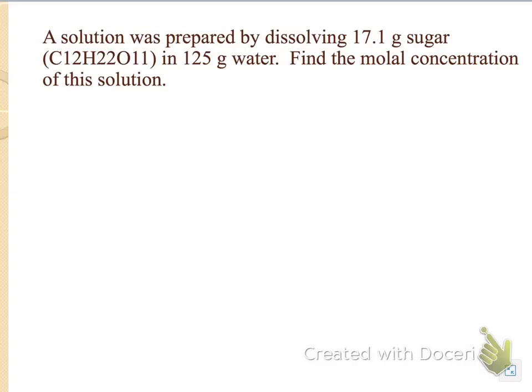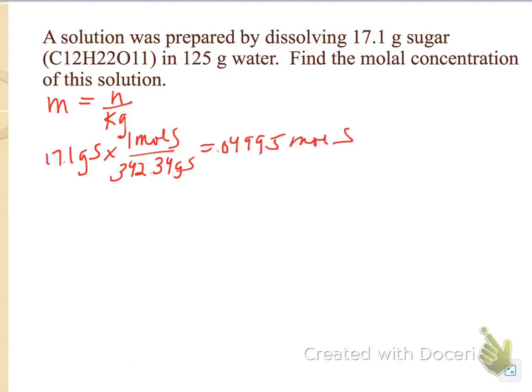Okay, so here we have a solution of 17.1 grams of sugar in 125 grams of water. We want to find the molal concentration. So molality is moles over kilograms. And if I have 17 point, I have to find moles first. So if I have 17.1 grams of sugar, I can find how many moles I have by dividing it by its molar mass.